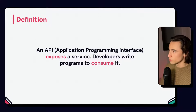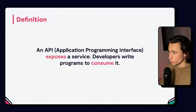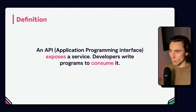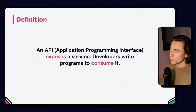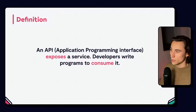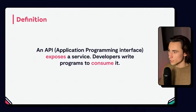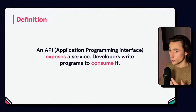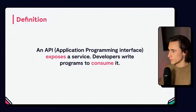A technical definition of an API: an API is an application programming interface. It exposes a service and developers write programs to consume it. If we think of the actions or apps from the past video, we might take the example of Google Sheets. Google Sheets has an API, and in the API we have different services. One of the services might be to get all of the data in a specific sheet. And so the Google Sheets API exposes the service that allows you to read data in the sheet. Using n8n, we're going to be able to consume the Google Sheets API using the different services, for example, updating rows or getting data in a sheet.